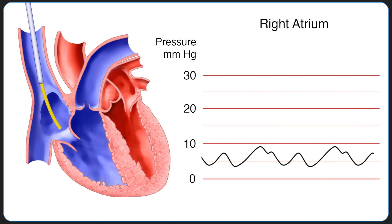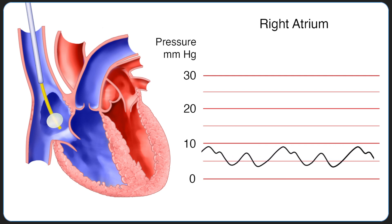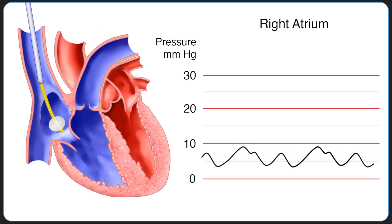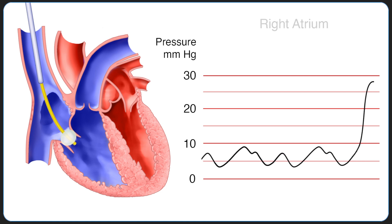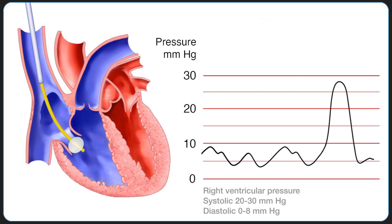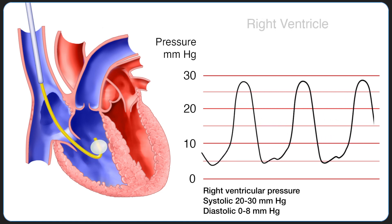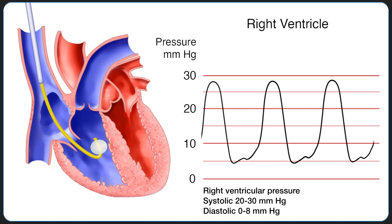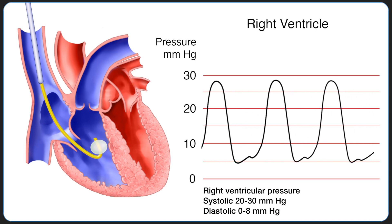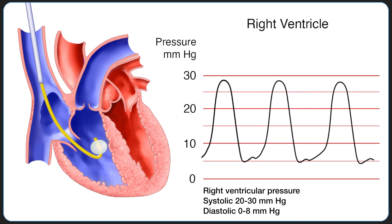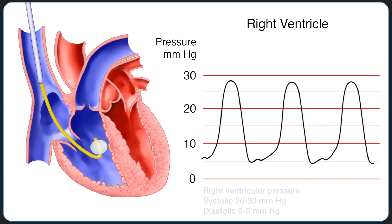The balloon is inflated and the catheter is advanced with each heartbeat. As the catheter traverses the tricuspid valve, right ventricular pressures will be measured and will appear on the monitor as a marked increase in systolic pressure. A right ventricular waveform is seen with a steep systolic slope.